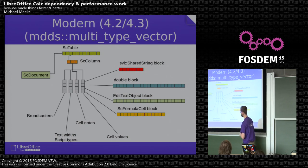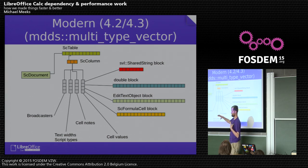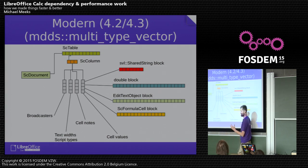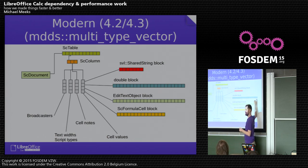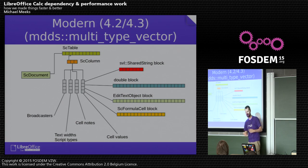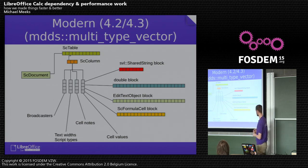So in 4.2 we refactored this to make it very nice and clean, and split much of the core of calc out into a thing called MDDS. We now have nice long linear chunks — so if you have doubles all the way down a column in calc, this turns into a beautiful representation. Say you had a million doubles in a row, you get an 8 megabyte block full of doubles, which is very nice from a computation perspective — very simple to add up, rather than dotting all over memory.